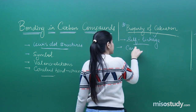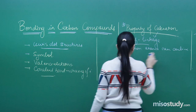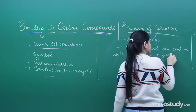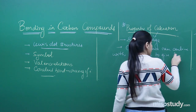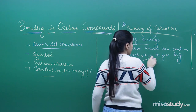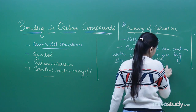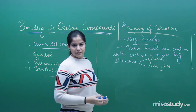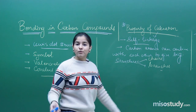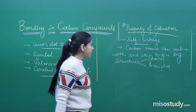Carbon atoms can combine with each other to give big structures. These structures can include chains and branches. This is actually what builds up carbon compounds — it has built our entire body, the bodies of animals and plants.